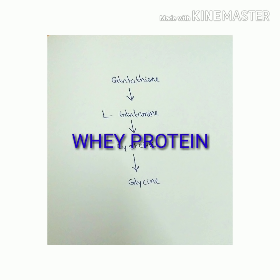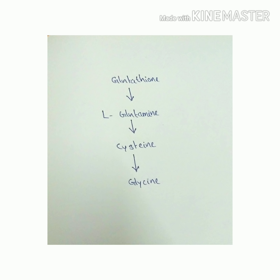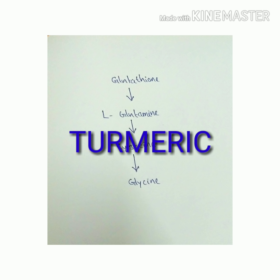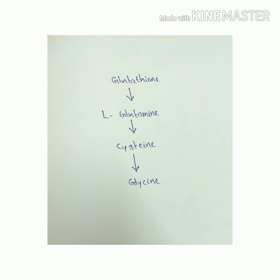Another source is whey protein, which contains cysteine. I have already made a video about whey protein and I will give you a link in the description box. You should also avoid alcohol, as it interferes with glutathione production. High protein foods rich in amino acids are very important.